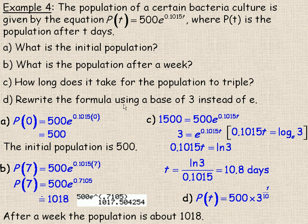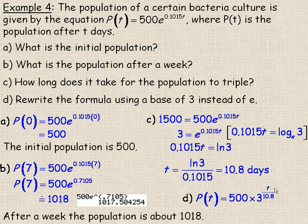For part D, it says rewrite the formula using a base of 3 instead of E. P(T) would then be my revised formula: instead of E to the power of 0.1015T, I would write 3 to the power of T over 10.8 days. The 10.8 days is the amount of time to triple — that's why the base here is 3.